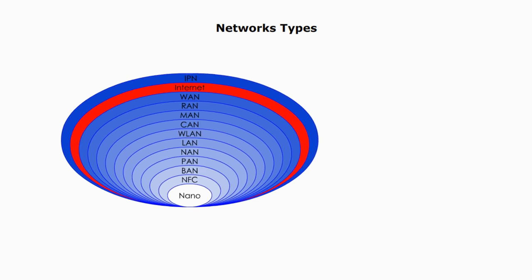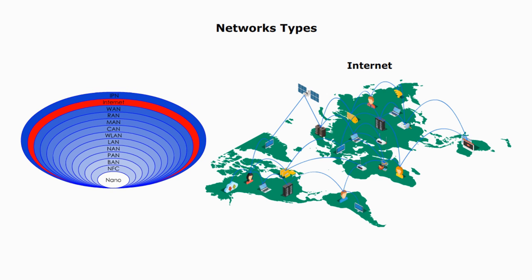The Internet is the global system of interconnected computer networks. It is a network of networks that consists of private and public networks of local to global scope, linked by the broad array of networking technologies.